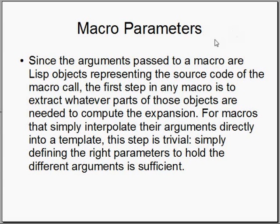Regarding macro parameters: since the arguments passed to a macro are Lisp objects representing the source code of the macro call, the first step in a macro is to extract whatever parts of those objects are needed to compute the expansion. For macros that simply interpolate their arguments directly into a template, this step is trivial — simply defining the right parameters to hold the different arguments is sufficient.